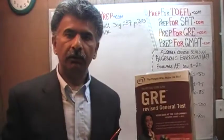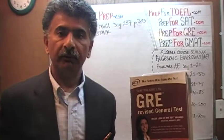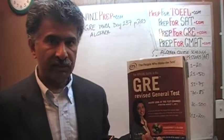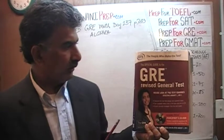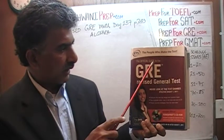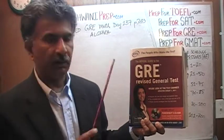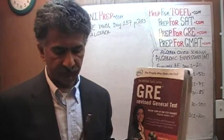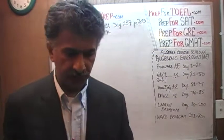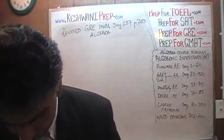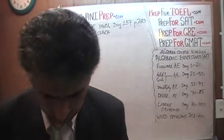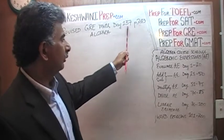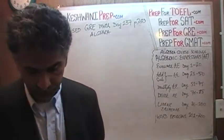We are here because we want to prepare for the GRE. We have been solving math problems out of this book — the Official Guide to the GRE, the Revised General Test. If you do not own this book already, purchase one immediately; you are going to need it. The problem we are about to solve is on page 243, and today is our lesson number 137.